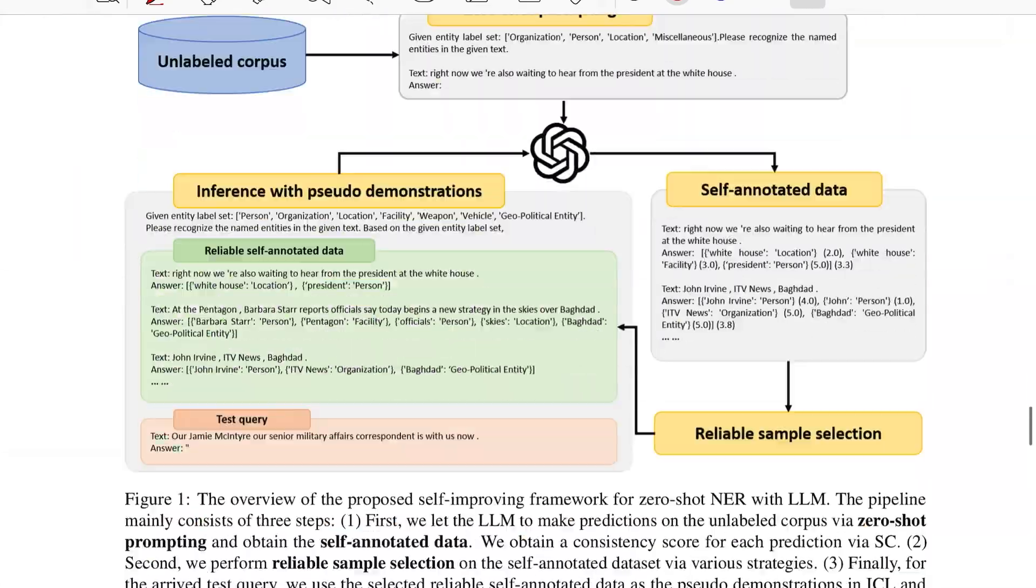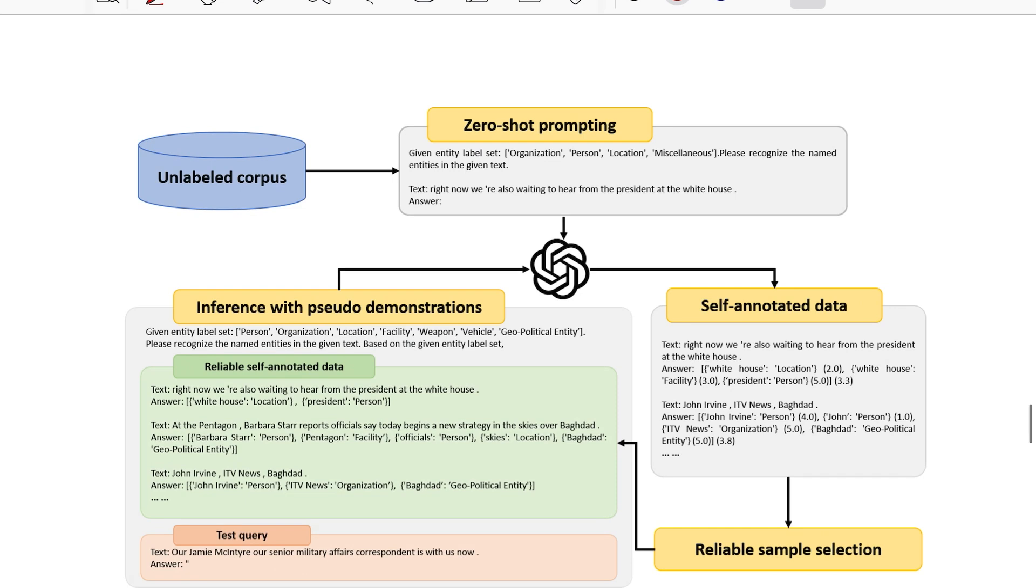So they had a pretty descriptive figure. This is an entire overview of the self-improving framework that they propose for doing zero-shot NER with large language models. Let's go through this step by step.